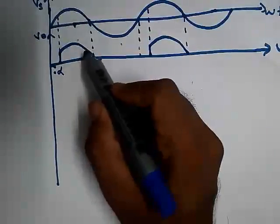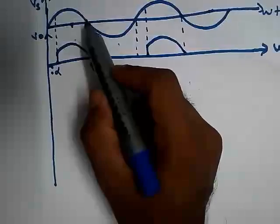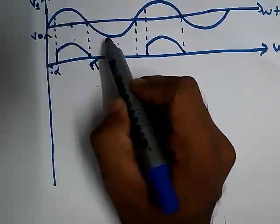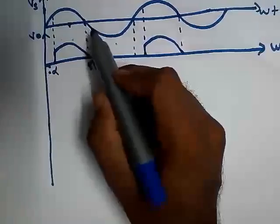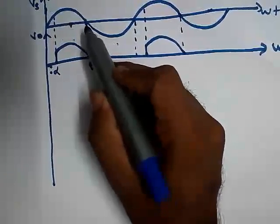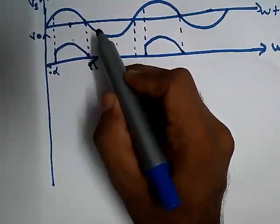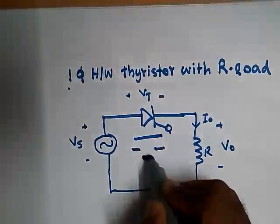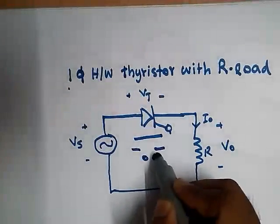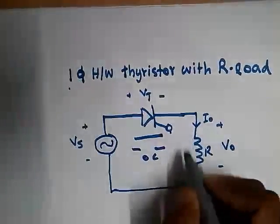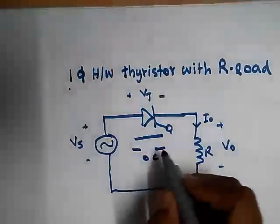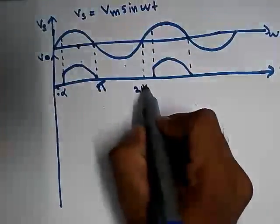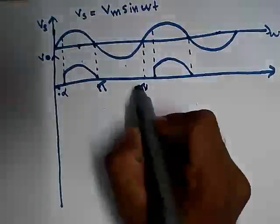After pi, the voltage starts to get into reverse polarity. Since reverse voltage is applied across the thyristor, the thyristor gets turned off — it acts as an open circuit. So the output voltage becomes 0 since it is open circuited. From pi to 2pi, the output voltage is 0.